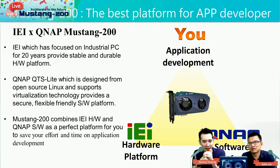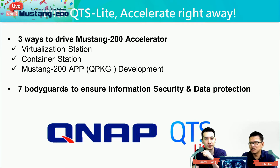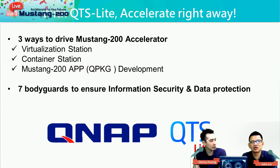What is QTS Lite? QTS Lite provides three ways to drive the Mustang 200 accelerator card, and it also provides seven bodyguards to ensure information security and data protection. The three ways to drive Mustang 200 are: virtualization station, container station, and Mustang 200 app QPKG development.